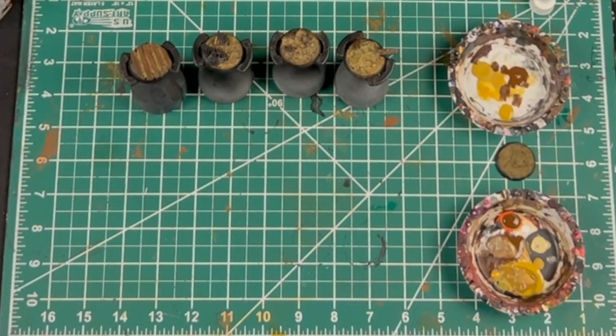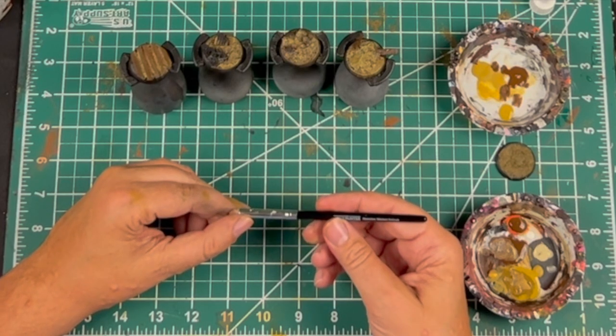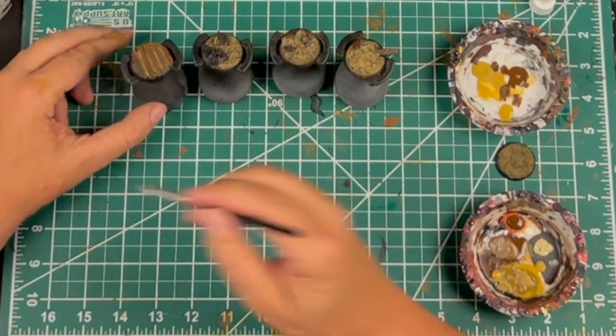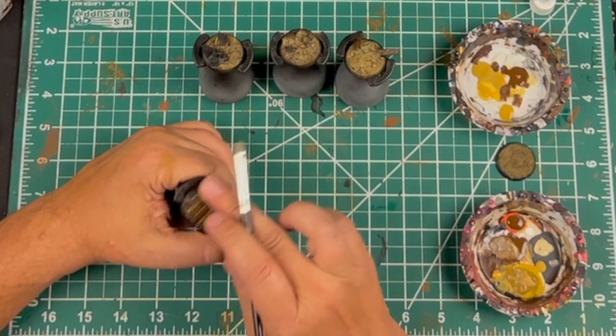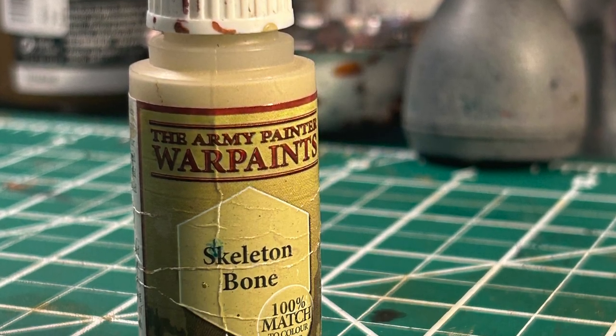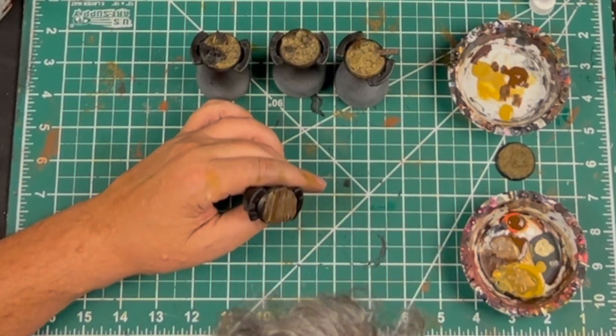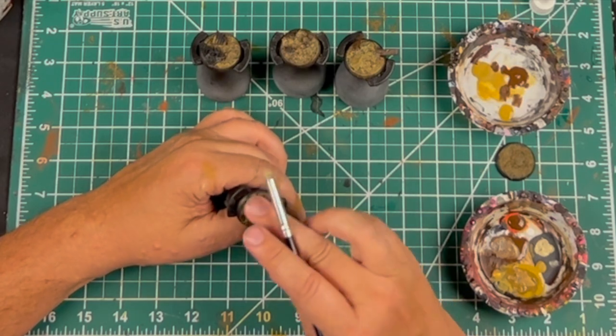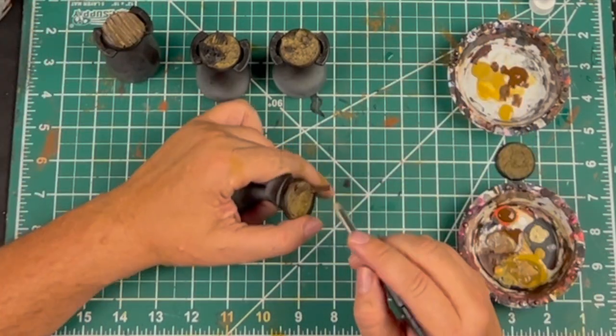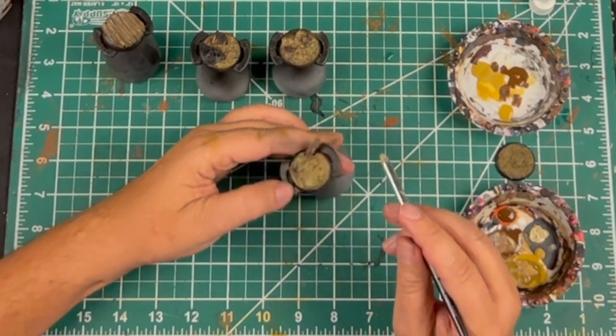We're going to put a dry brush over the wood using our special dry brush from Army Painter. This is the Masterclass Miniature Dry Brush, looks almost like a little makeup powder brush. We're going to use bone for that dry brush - Army Painter Skeleton Bone - just to highlight the wood planks. We're going to dry for a few minutes and do some metal.